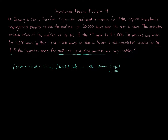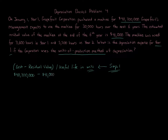Units could be widgets produced, hours used, days used, or other measures depending on the context. The cost is $40,700,000 minus the residual value of $41,000. For the useful life in units, note that six years is the time period — used for straight-line or double declining balance — but for units of production we use the expected number of units, which here is 30,000 hours.